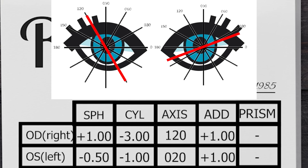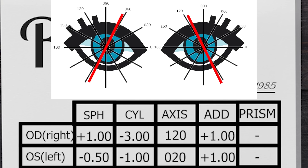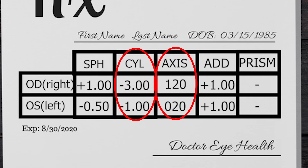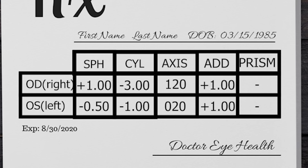It is actually more common for prescriptions when we are young to have an axis closer to the 180-degree line, and then it gradually becomes closer to 90 degrees as we age. The last two sections describe the add — or additional lens power needed to help someone see up close, as used in bifocals — and the prism, which isn't used very often but is necessary for individuals who have fusion difficulties and may end up seeing double.